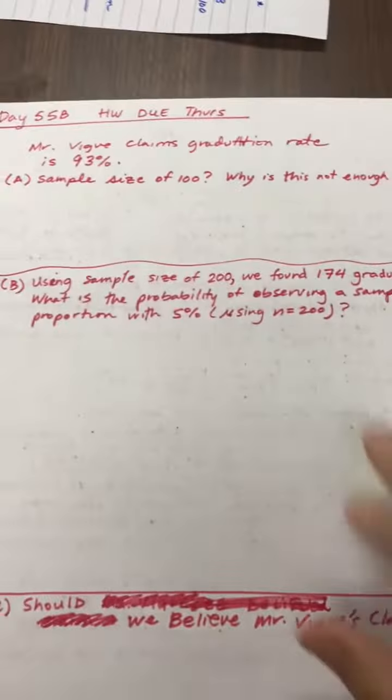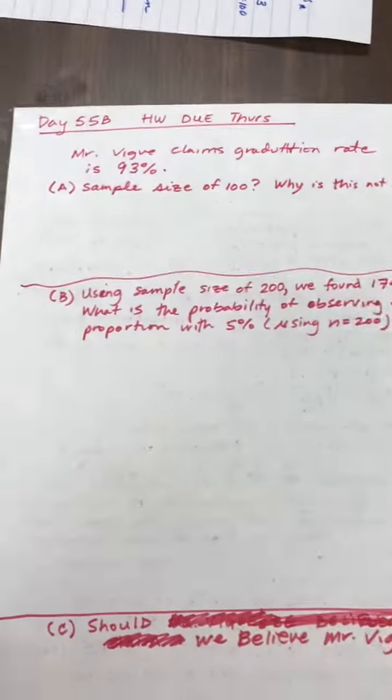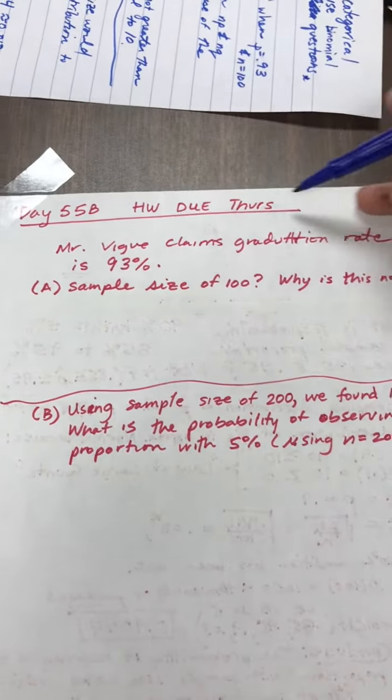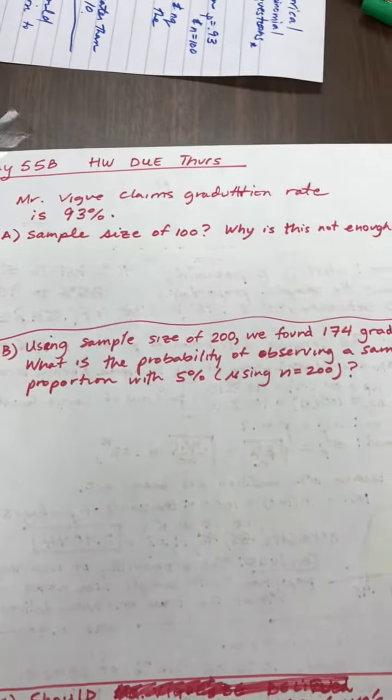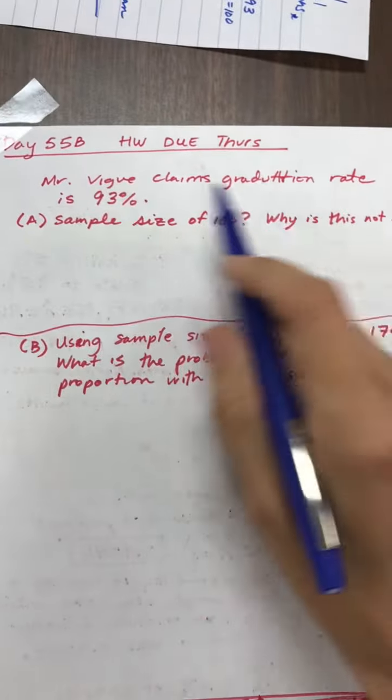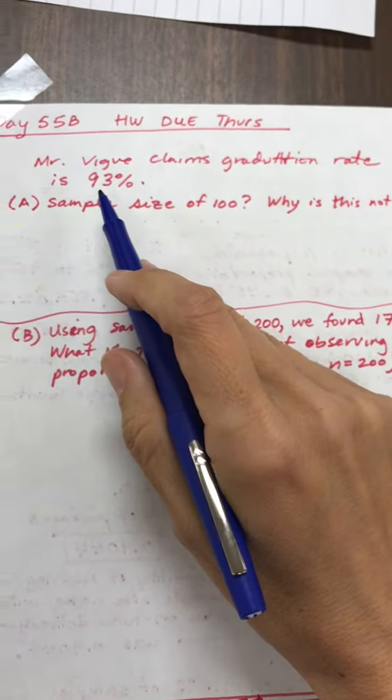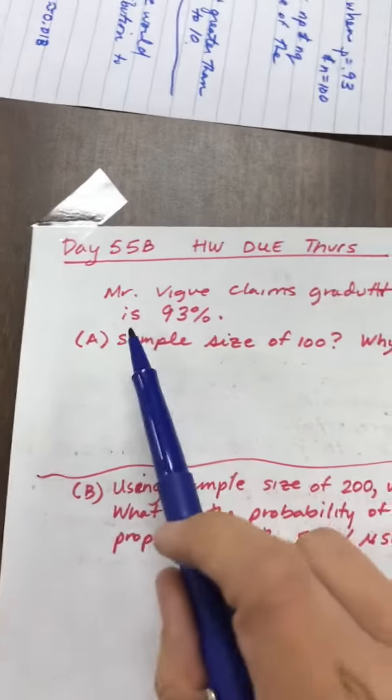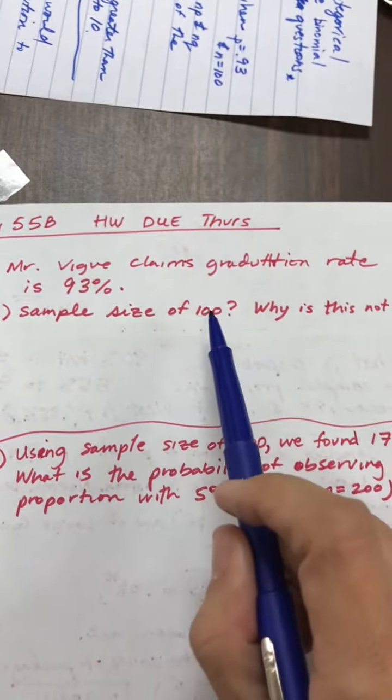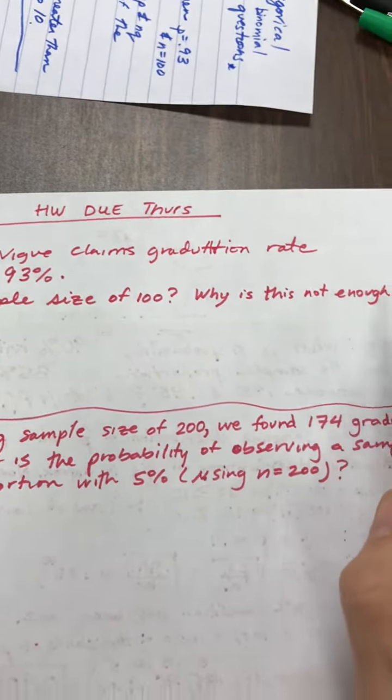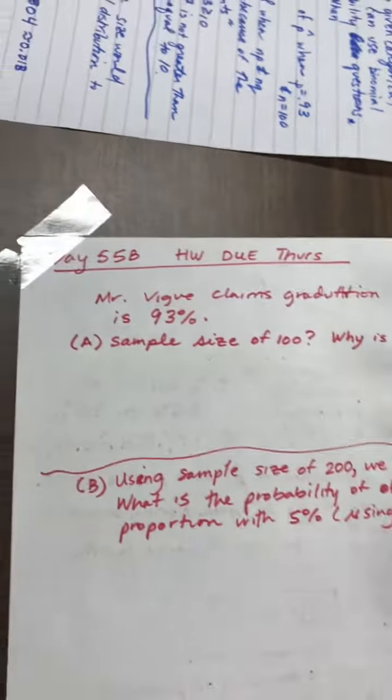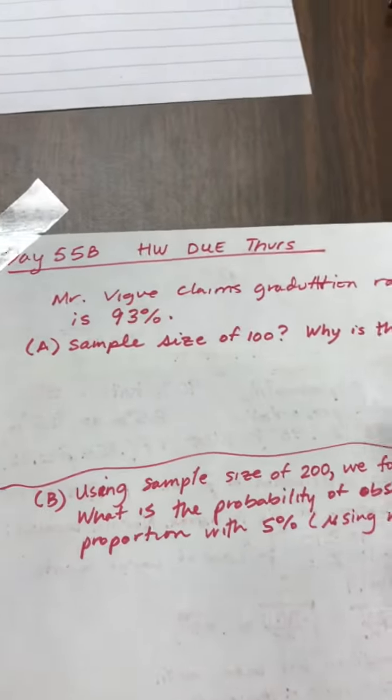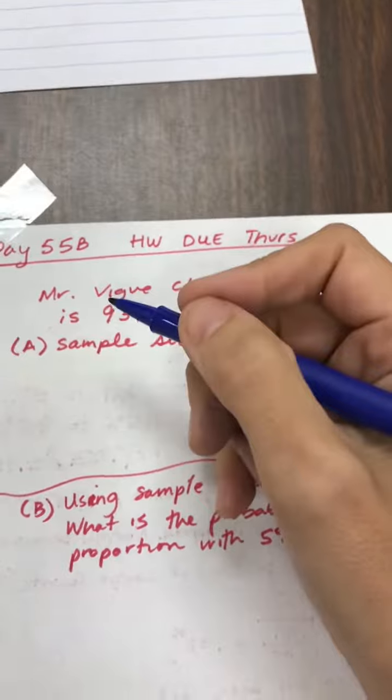Now, using this as our notes on the back or on a separate piece of paper, and you can staple it, we're going to do what I call 55B, and we've changed the directions here. So it says Mr. Vigueux claims the graduation rate is 93%, pretty similar here to they claim the delivery rate was 90%. And now, if we set the sample size of 100, why is this not enough?